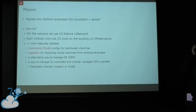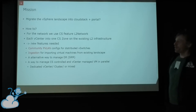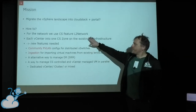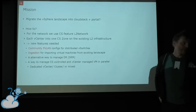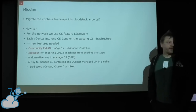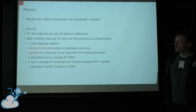Our mission is to migrate the vSphere-managed landscape into CloudStack. There will still be a vSphere or vCenter underneath, but we don't want it accessed directly as we do now. We thought about how to achieve this. We have network issues — CloudStack has a Layer 2 network concept, and we don't want the whole CloudStack infrastructure deployed on the brownfield. Therefore we still want to use VDOM-based firewall infrastructure. Each vCenter goes into one CloudStack zone on the existing Layer 2 infrastructure, so we need each VLAN in each CloudStack zone.